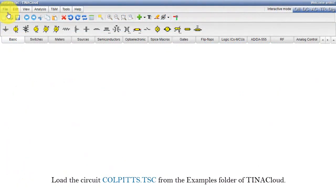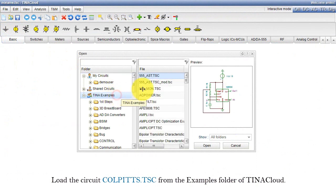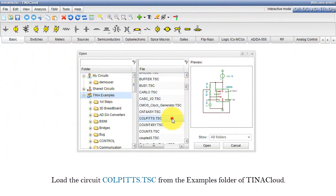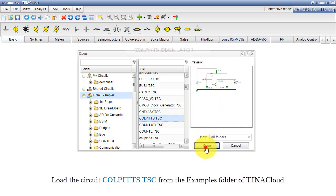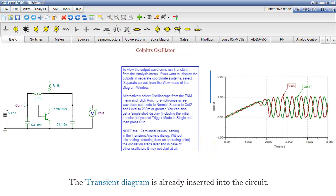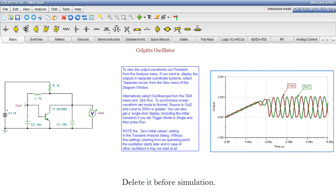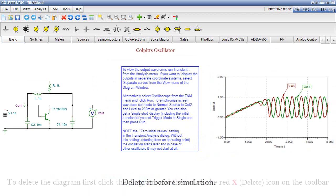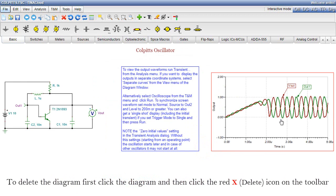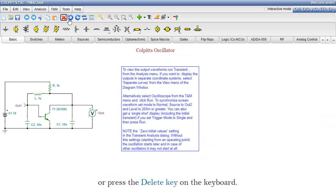Load the circuit colpits.tsc from the examples folder of TINA Cloud. The transient diagram is already inserted into the circuit. Delete it before simulation. To delete the diagram, first click the diagram and then click the red X icon on the toolbar, or press the delete key on the keyboard. Delete the additional text in the same way.